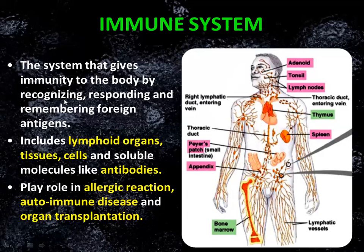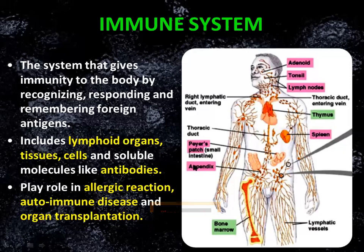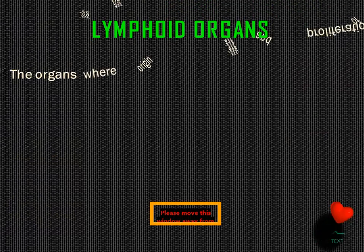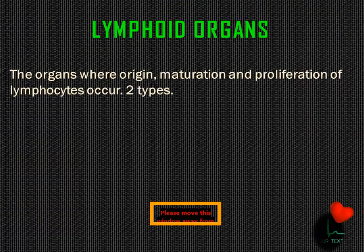The immune system gives immunity to the body by recognizing, responding, and remembering foreign antigens. It includes lymphoid organs, tissues, cells, and soluble molecules like antibodies. The immune system plays a role in allergic reactions, autoimmune diseases, and organ transplantation. The immune system may also become the reason for autoimmune reactions and allergic responses — negative responses caused by the immune system itself.